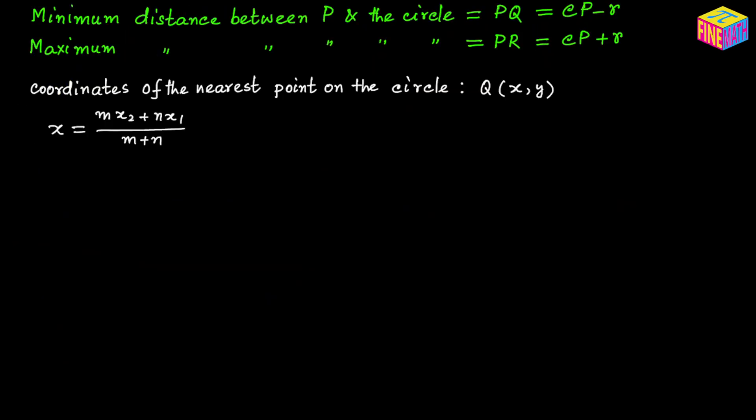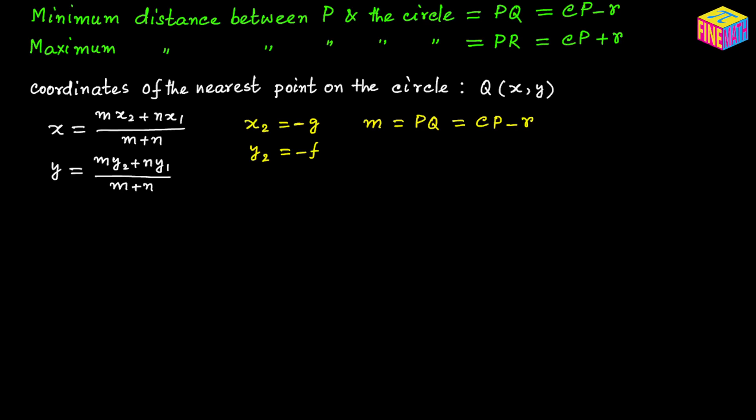Using the section formula, the x-coordinate of the point dividing a segment in ratio M:N is (M·x₂ + N·x₁)/(M + N), and similarly the y-coordinate is (M·y₂ + N·y₁)/(M + N). Here, we consider the center's coordinates as (x₂, y₂), M = PQ = CP − R, and N = CQ = R.